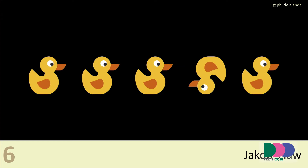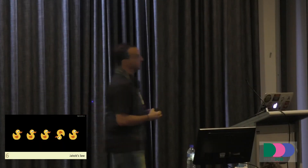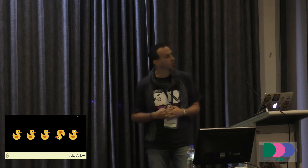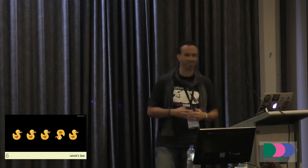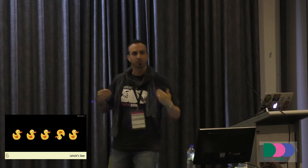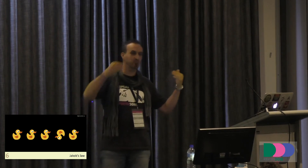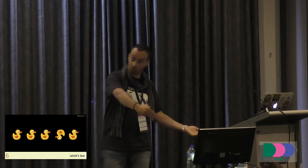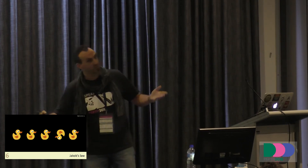On to Jacob's Law. You may have heard of Jacob Nielsen and the Nielsen Norman Group, handing out UX certifications — he's been around for a long time. His law is quite simple: users spend most of their time on other people's websites. Which means that when they get to your website, they would appreciate things working the same way as they do on other websites.